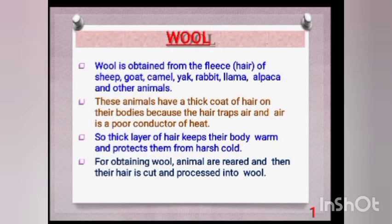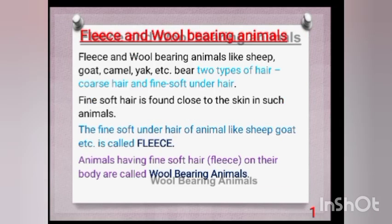Wool can be obtained from the fleece — the hairs — of sheep, goat, yak, and llama. These animals mainly have two types of hairs: the outer coat, which is dirty, and the inner hairs, which are fine, soft, and used for making wool.